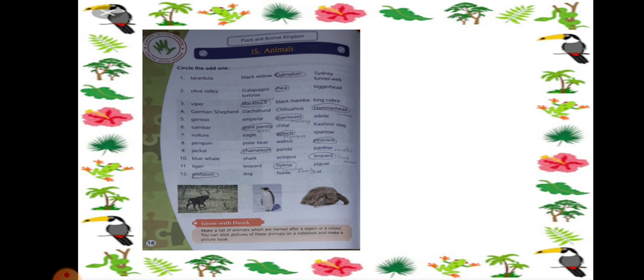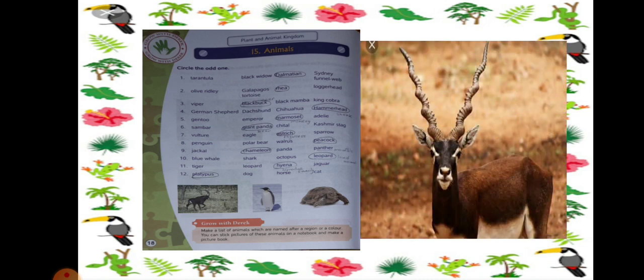Number 3, the odd one is Black Bug. So you can see this is an animal. Viper, Black Mamba and King Cobra, they are all the names of snakes. But Black Bug is different. So the odd one will be Black Bug.